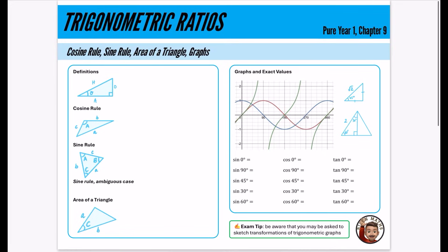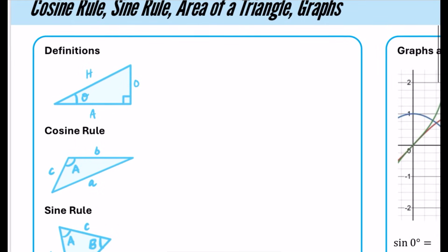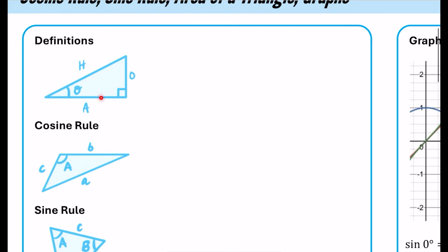We're going to dive in straight away with all of these different definitions on the left-hand side. When we have a right-angle triangle, the definitions are: sine theta is the opposite over the hypotenuse, cos theta is the adjacent over the hypotenuse, and tan theta is the opposite over the adjacent. So we have our SOH-CAH-TOA.